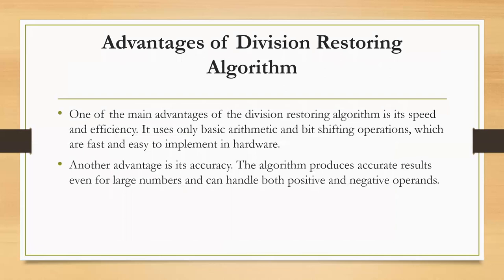Advantages of the Division Restoring Algorithm. The Division Restoring Algorithm is a method used to perform long division of two integers. It is a popular algorithm because of its efficiency, simplicity, and accuracy. First is speed: one of the main advantages is its speed. The algorithm can perform long division quickly, particularly for large numbers, because it only needs to perform a small number of arithmetic operations for each digit of the quotient, making it an efficient way to calculate the result of a division.